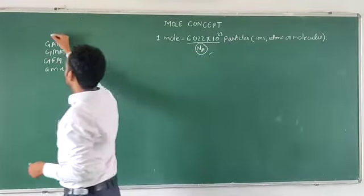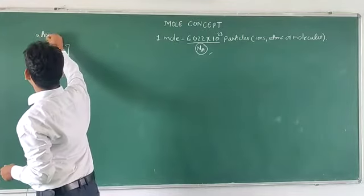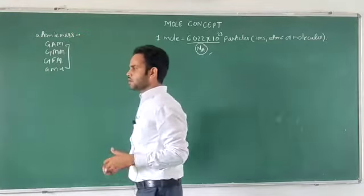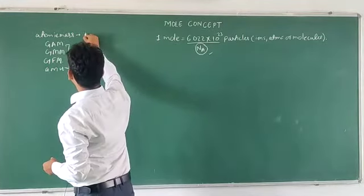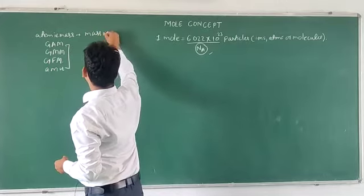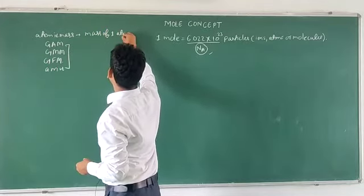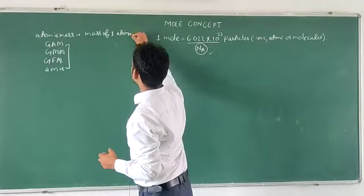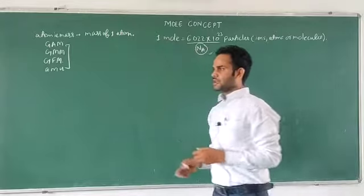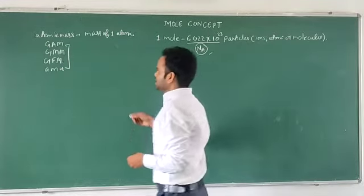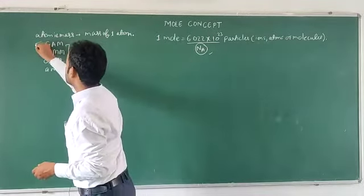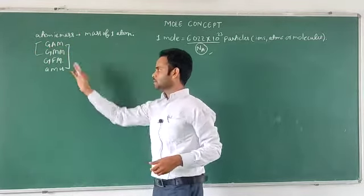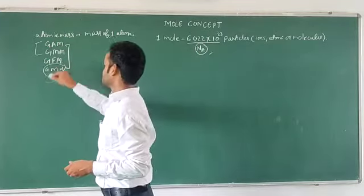So if we talk about atomic mass first — atomic mass means the mass of one atom. Like the mass of the sodium atom would be 23 units. So this is atomic mass. Atomic mass means the mass of one atom, but there are some molar masses like gram atomic mass, gram molecular mass, gram formula mass, and atomic mass unit.